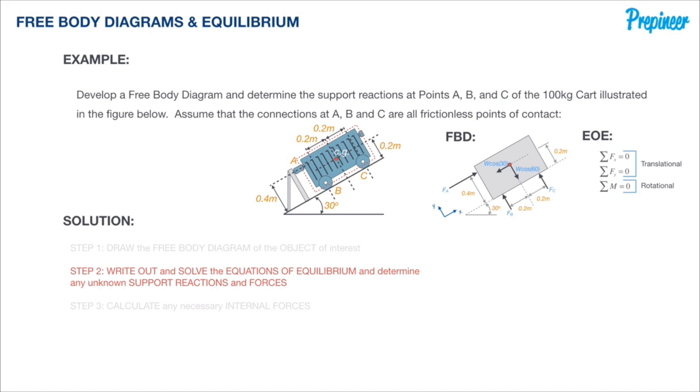Let's start with our translational equations which run along the X-Y axis. Gathering all of the force components that run along the X axis, we get F sub A minus W cosine 60 equals zero. Doing the same for the components that run along the Y axis, we get F sub B plus F sub C minus W sine 30 equals zero.